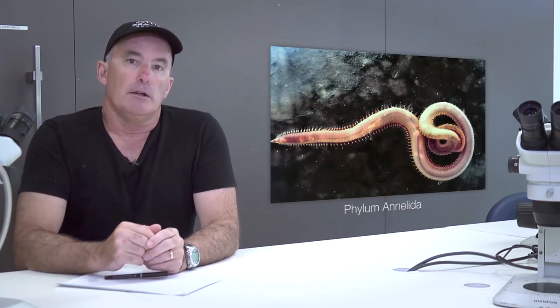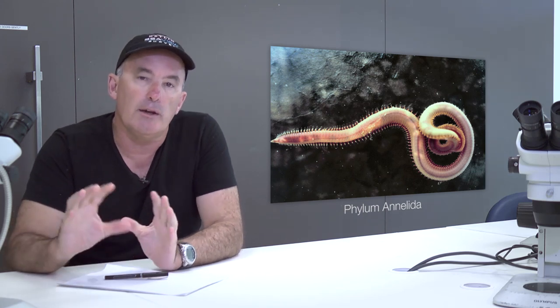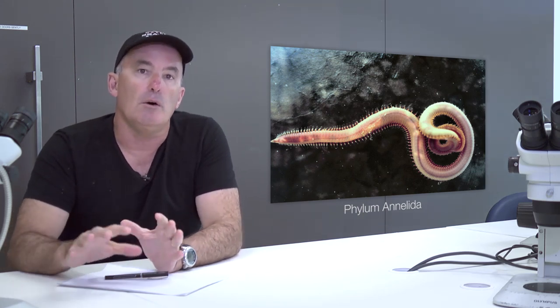Annelids or segmented worms are a prominent group on tropical coastal ecosystems. The most important group in the ocean within the segmented or annelid worms are the polychaete worms and they have a great variety of different ways of deriving nutrition.